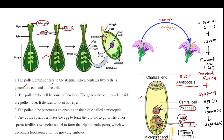The zygote will develop into the embryo, and the triploid cell will develop into the endosperm. The endosperm will nourish the developing embryo, so endosperm develops first and then the embryo develops. One sperm fertilizes the egg to form the diploid zygote; the other sperm fertilizes the two polar nuclei to form the triploid endosperm, which becomes a food source for the growing embryo.